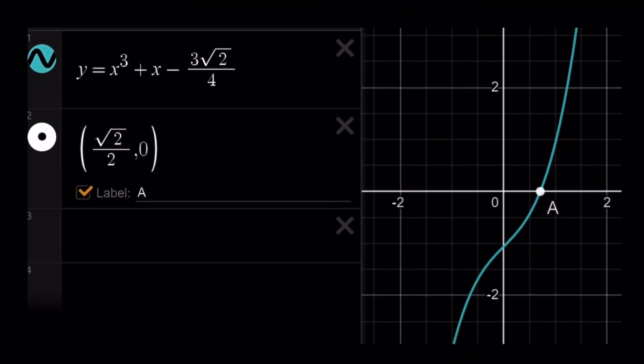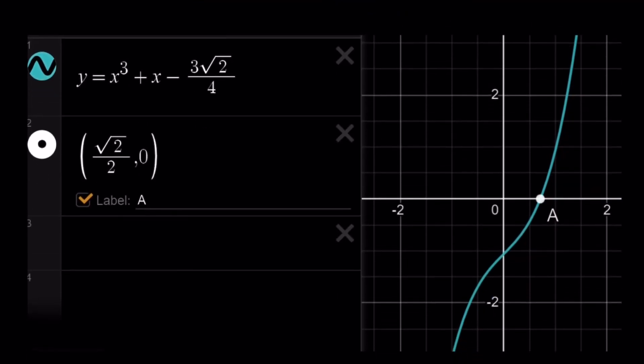So here's the graph of our polynomial. And √2/2, point A, is the x-intercept, which is a solution for this equation. And this brings us to the end of this video. Thank you for watching. I hope you enjoyed it. Please let me know. Don't forget to comment, like and subscribe. I'll see you next time with another video. Until then be safe. Take care. And bye bye.